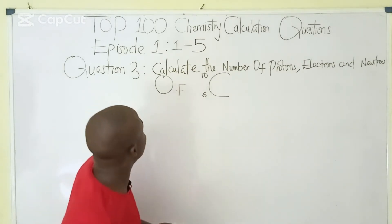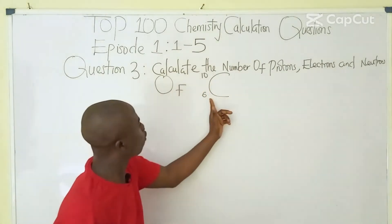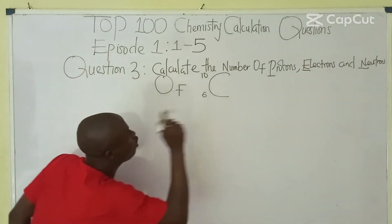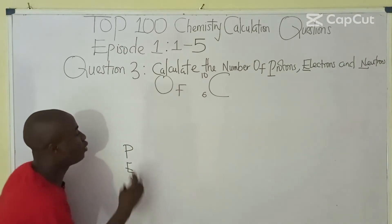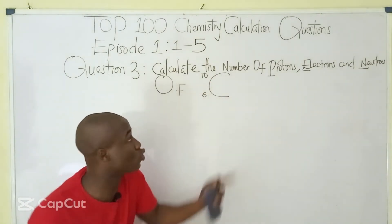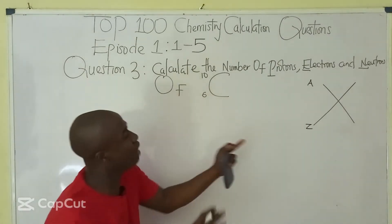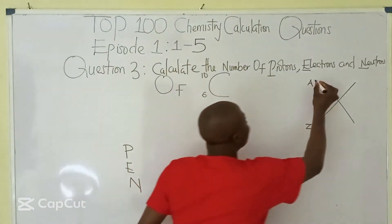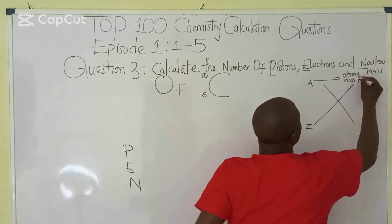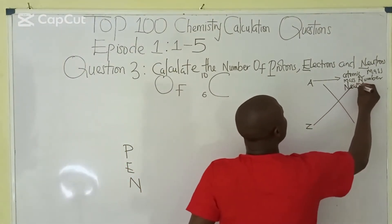The third question says: calculate the number of protons, electrons, and neutrons of ¹²C₆ (carbon). This atom is a neutral atom — it is without a charge. We write X with A (atomic mass / mass number / nucleon number) and Z (atomic number / proton number).